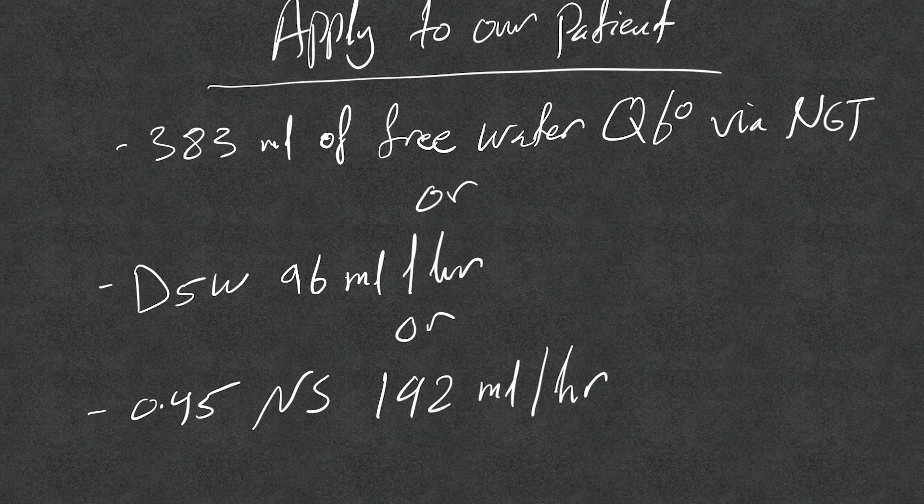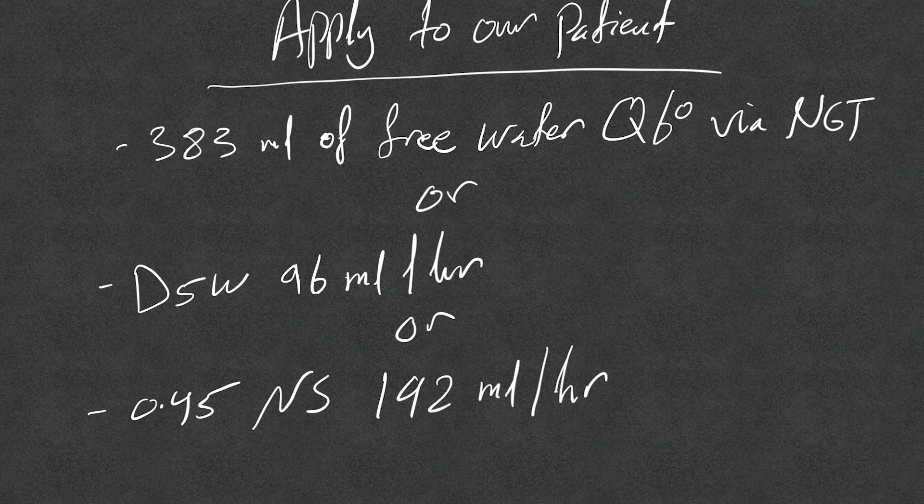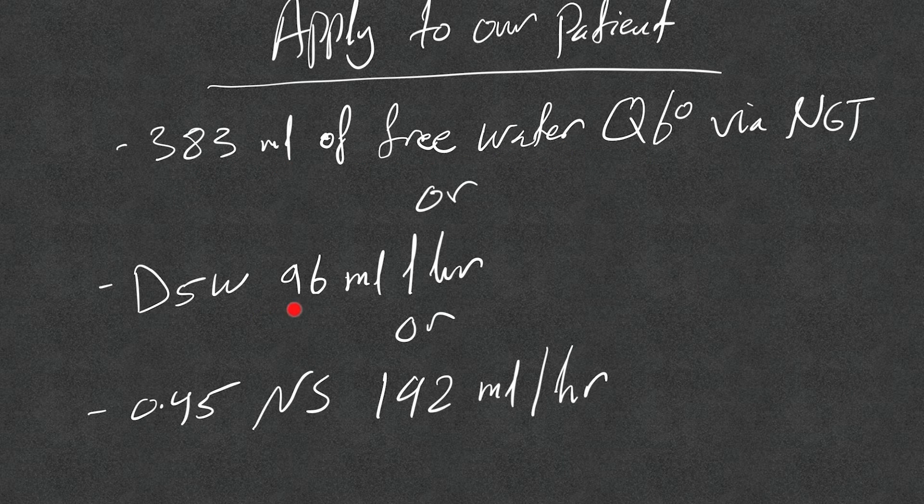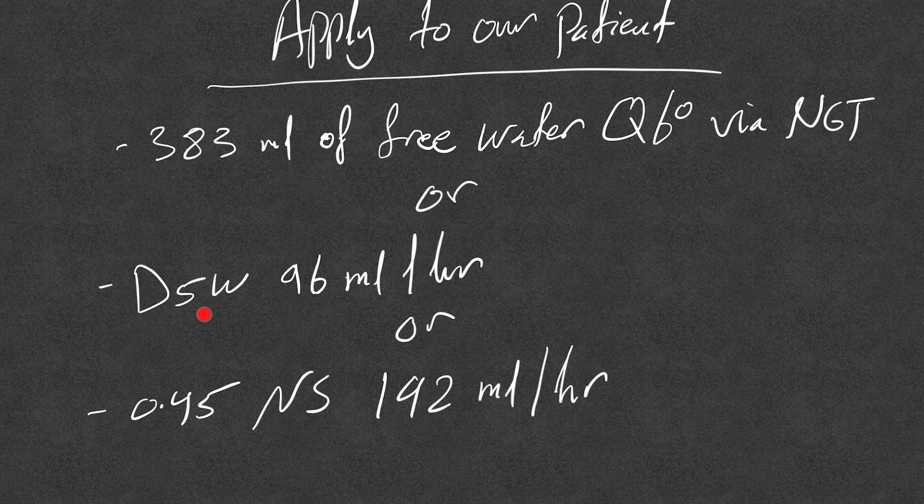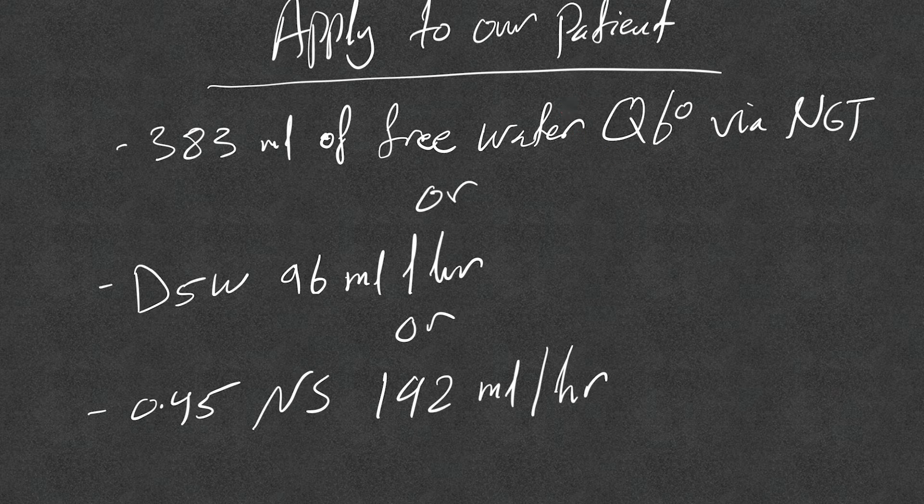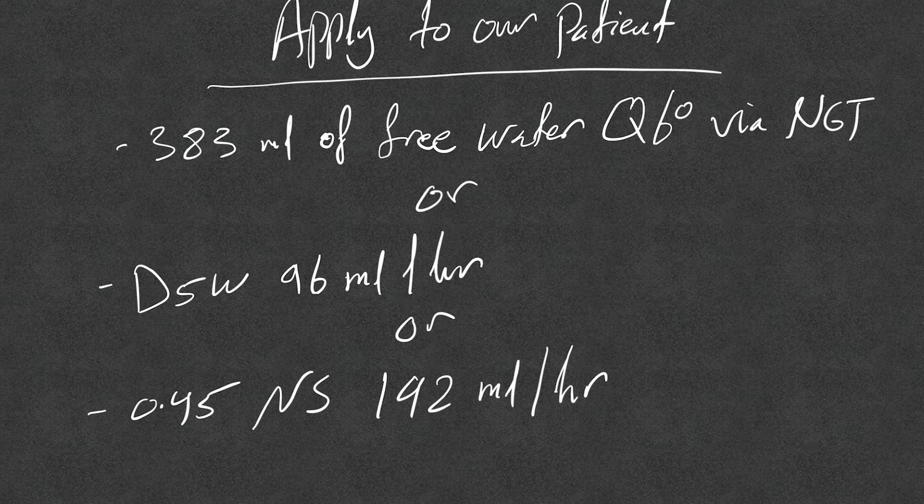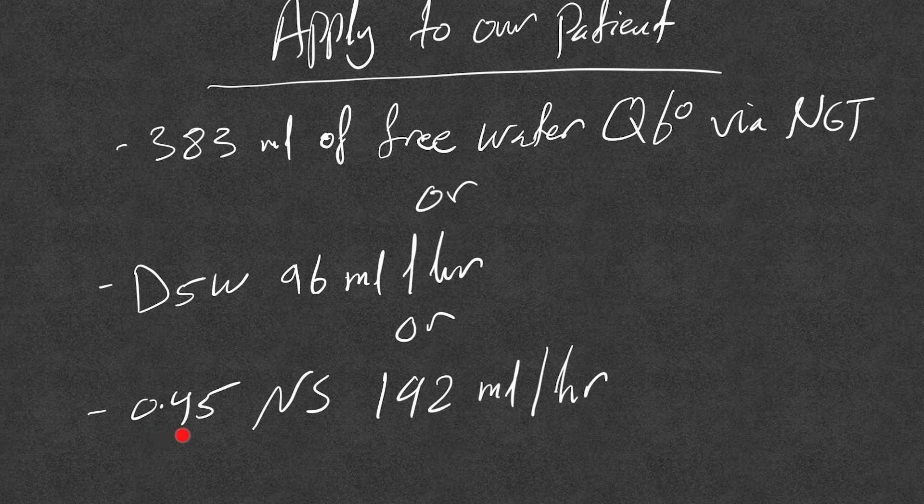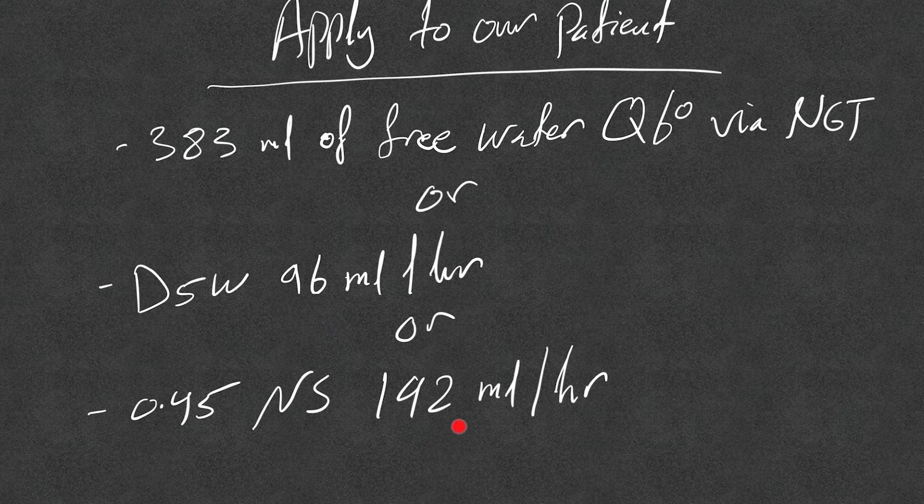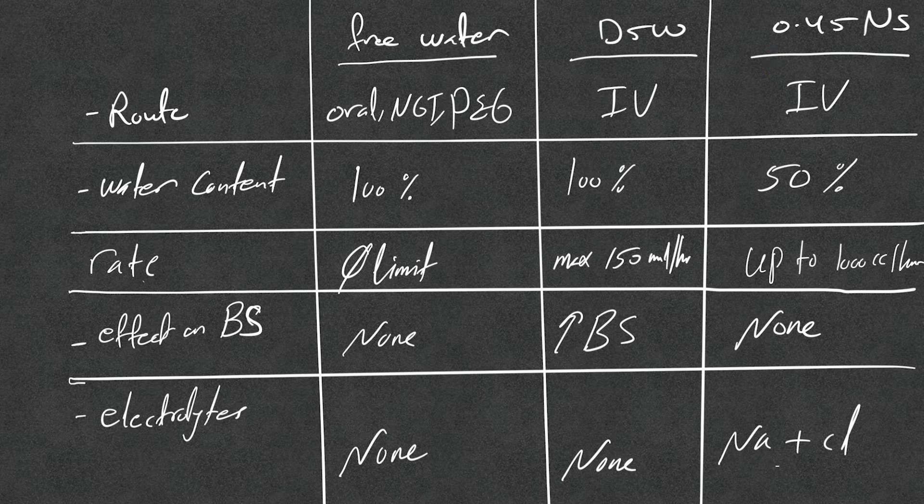Now let's apply to our patient. So that means our patient will get, remember, 383 ml of free water every six hours, right? Or 96 ml per hour if we're gonna use D5W. So if we're gonna use oral free water, we give it every six hours. So you can give it every four or every two, just do the calculation. Or D5W 96 ml per hour, or the 0.45 or half NS, we double the 96, it's 192 ml per hour. Remember that.